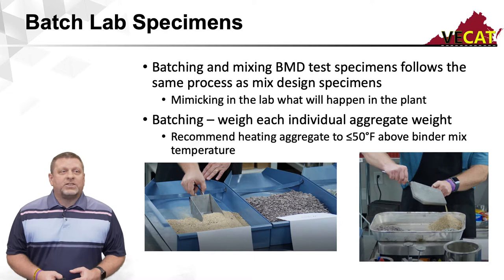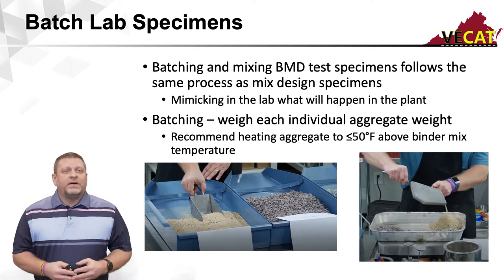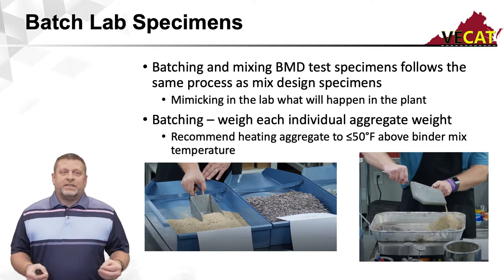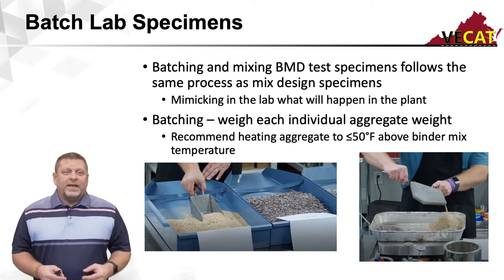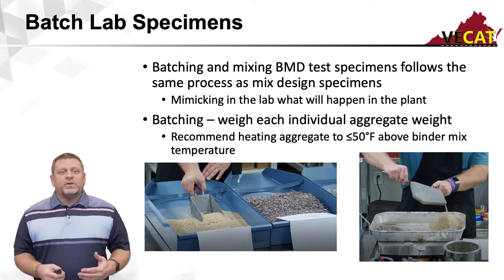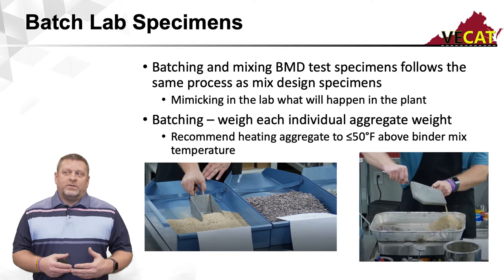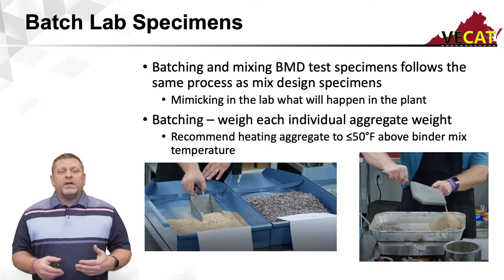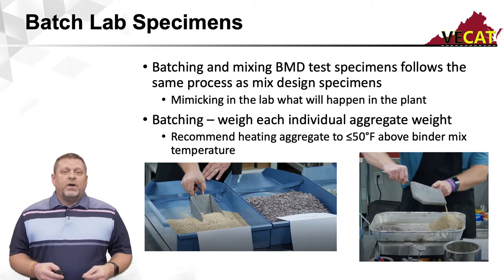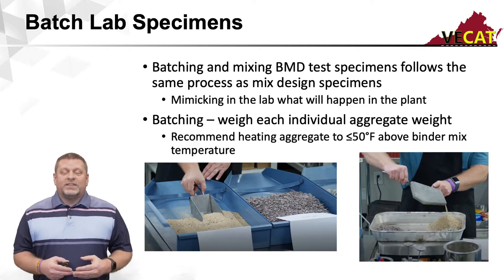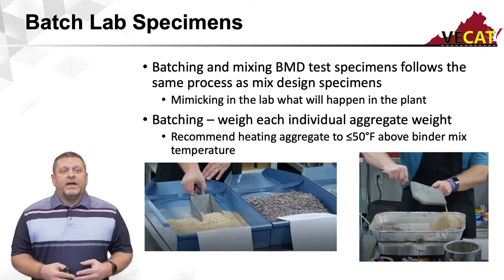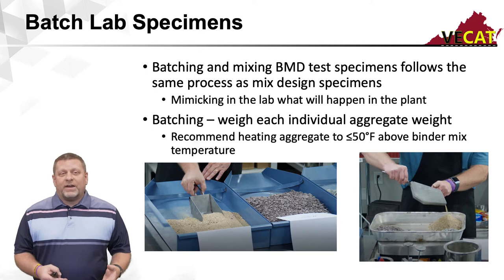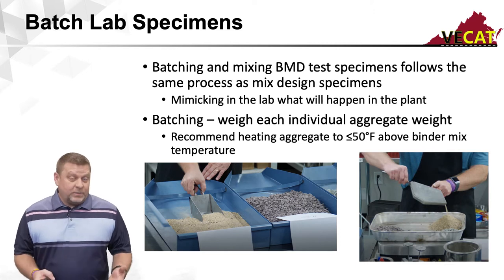Batching and mixing the BMD specimen follows the same process as a volumetric specimen. The important part is you want to simulate as best you can what your mix is going to do during production. So you want to batch your aggregates individually. As you can see in this picture, we're separating our individual aggregates so that if we add too much, we can remove a little without removing the wrong material. It's also recommended that when you put aggregate in the oven for mixing, you add it to the hottest oven you have — mixing temperature-wise.